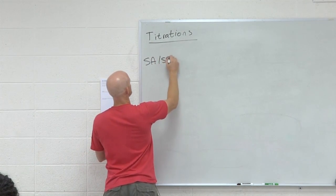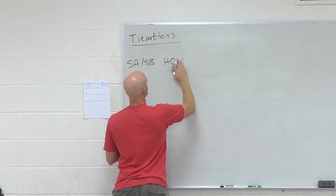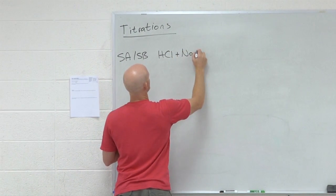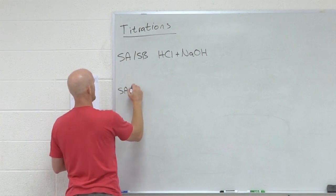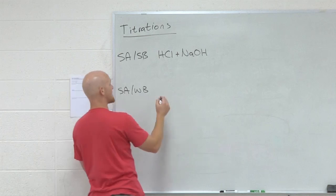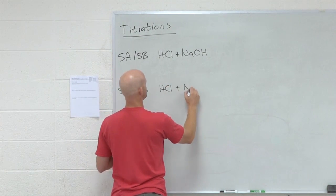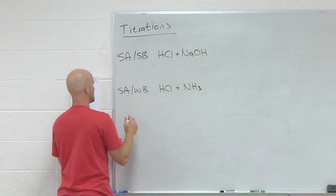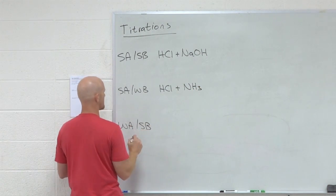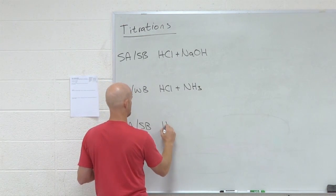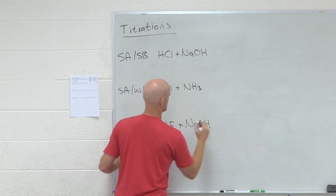The three types of titrations with examples: strong acid plus strong base — a good example is HCl plus NaOH; strong acid plus weak base — a good example is HCl and ammonia; and weak acid plus strong base — a good example is HF with NaOH.